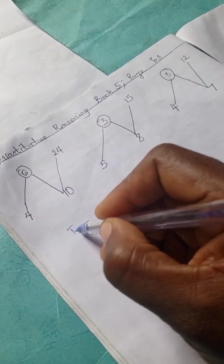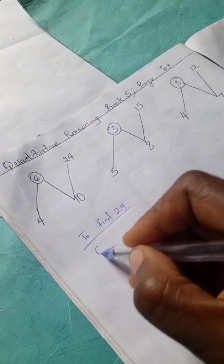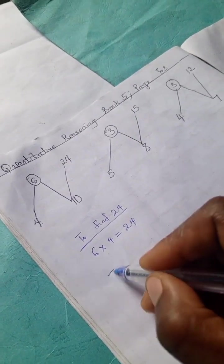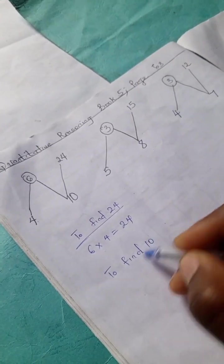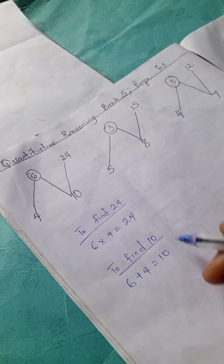Alright, so we're going to be working with 2 examples. So to find 24, we simply have 6 times 4 is 24. Alright, to find 10, we're going to have 6 plus 4 is 10.